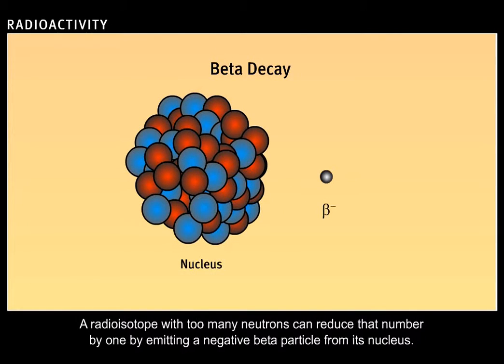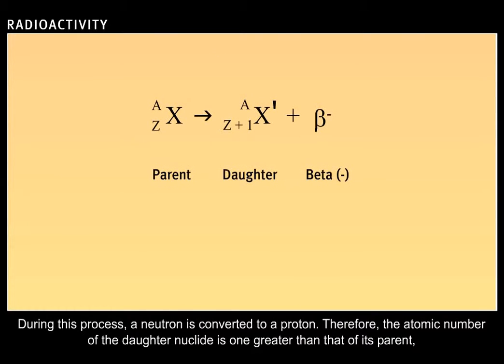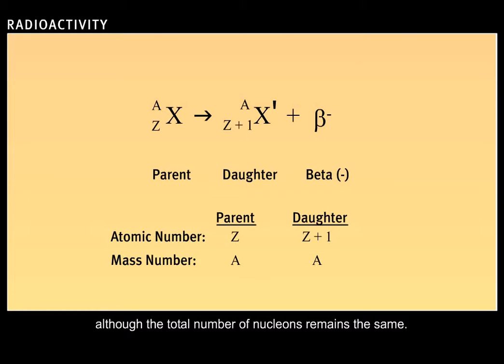A radioisotope with too many neutrons can reduce that number by one by emitting a negative beta particle from its nucleus. During this process, a neutron is converted to a proton. Therefore, the atomic number of the daughter nuclide is one greater than that of its parent, although the total number of nucleons remains the same.